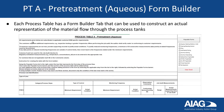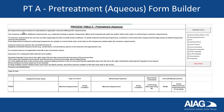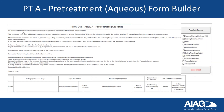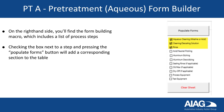Alternatively, each process table has a form builder tab that can be used to construct an actual representation of the material flow. Let's try with process table A. You'll see that the header is the same as before, but the rows are unpopulated. On the right-hand side, you'll find the form building macro, which includes a list of process steps. Checking the box next to a step and pressing the populate forms button will add a corresponding section to the table.